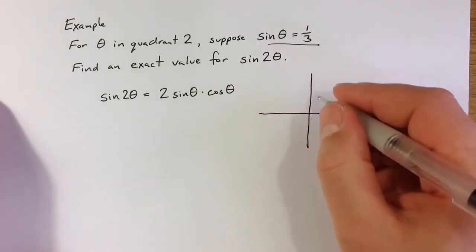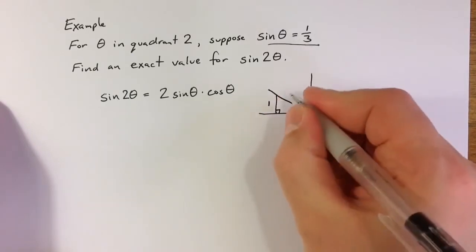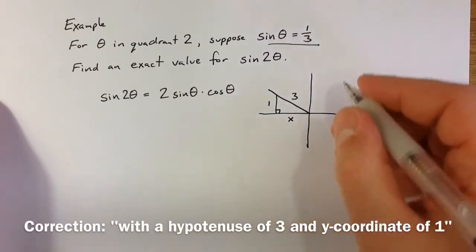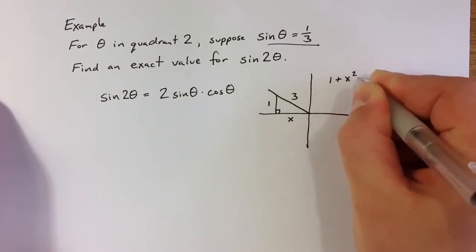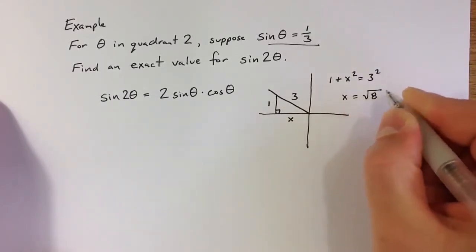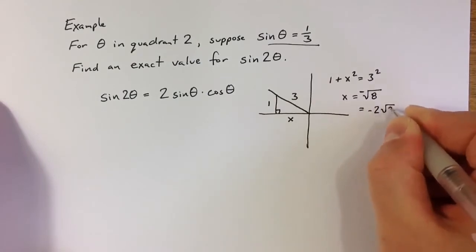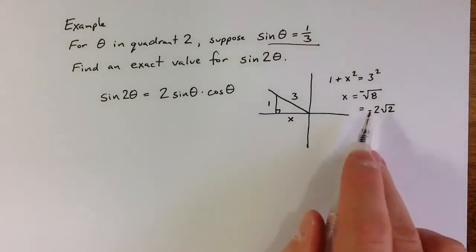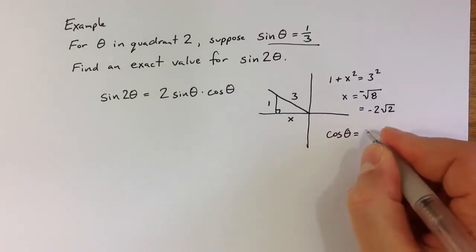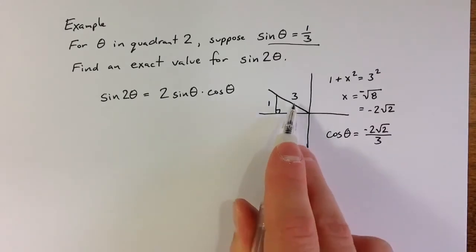Since theta is in the second quadrant, I can draw a reference triangle with a hypotenuse of 3 and a y-coordinate of 1. We don't know the x-coordinate, but from the Pythagorean theorem, 1 squared plus x squared equals 3 squared, so x equals the square root of 8. Because we're in the second quadrant, we take the negative square root of 8, which is negative 2 times the square root of 2, since 8 has a perfect square factor of 4. This means cosine of theta equals negative 2 square roots of 2 over 3.